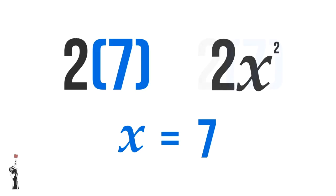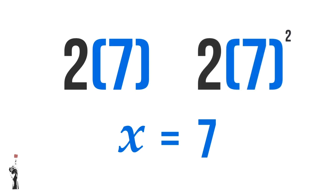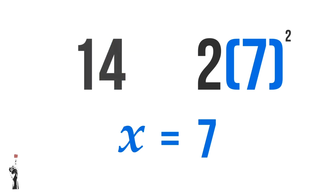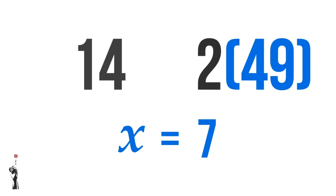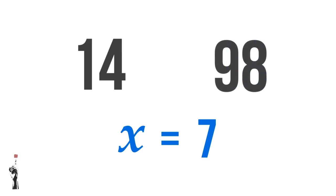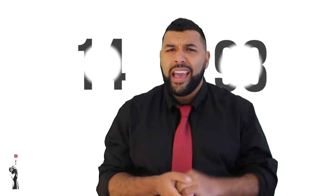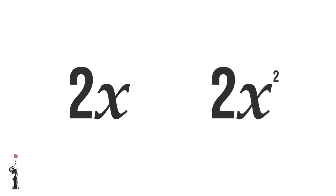However, on the right hand side, you'd have 2 multiplied by 7 squared, because the X was squared. So on the left hand side we have 14, and on the right hand side we'd have 2 multiplied by 7 squared, which is 49. So 2 multiplied by 49 gives us 98, whereas the other side is just 14. This gives us a clear indication that 2X and 2X squared are not the same — they are different.